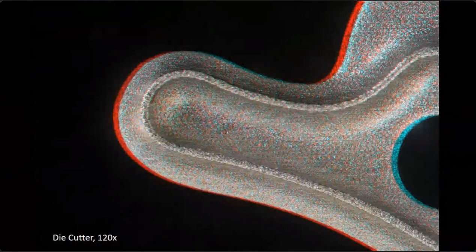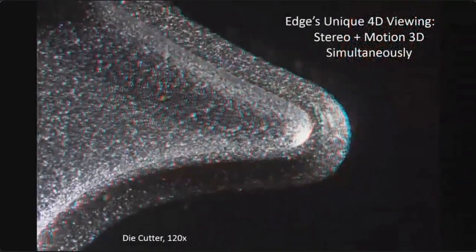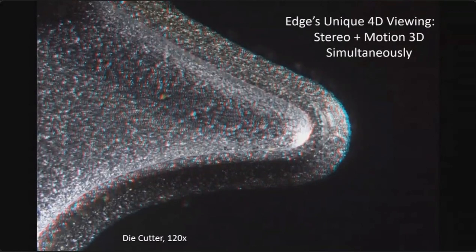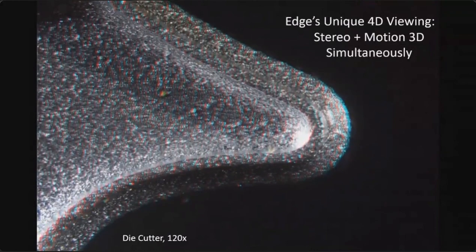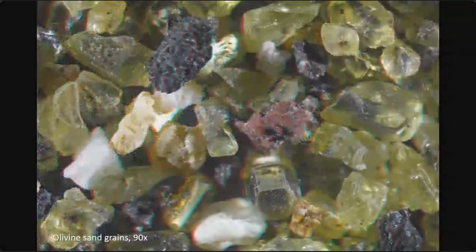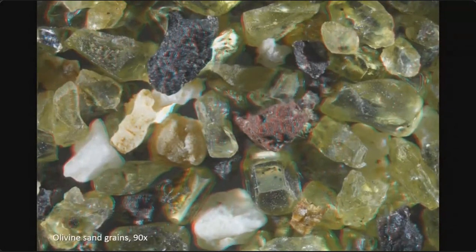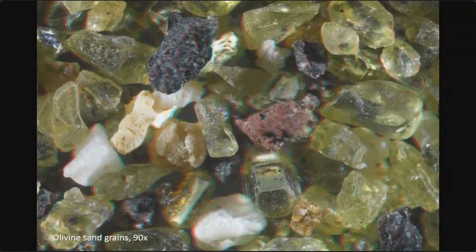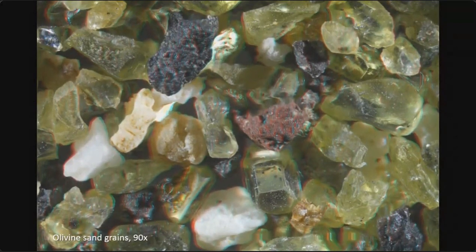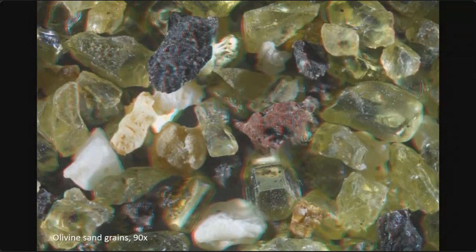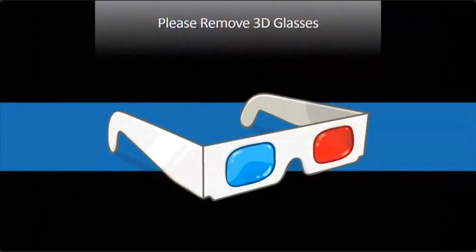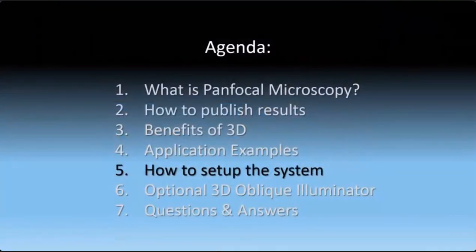This is a fungus gnat — a little tiny fungus gnat. And this is that die cutter we looked at before, in 3D. Here's something very unique: we call this '4D,' which allows you to see stereo 3D and motion 3D simultaneously — almost like a hologram. Here's another 4D example with olivine sand grains. With your glasses on, you're not only seeing it moving in 3D, you're seeing stereo 3D simultaneously, interrogating the specimen from left and right through stereo and up and down through rotation, giving you more information.